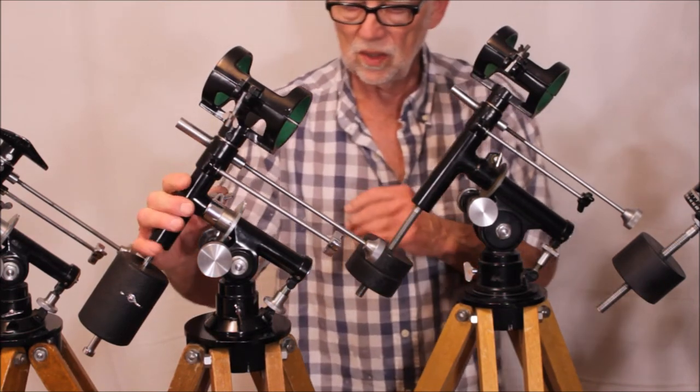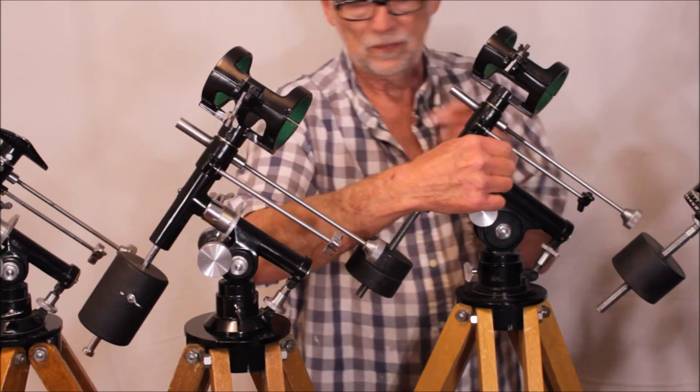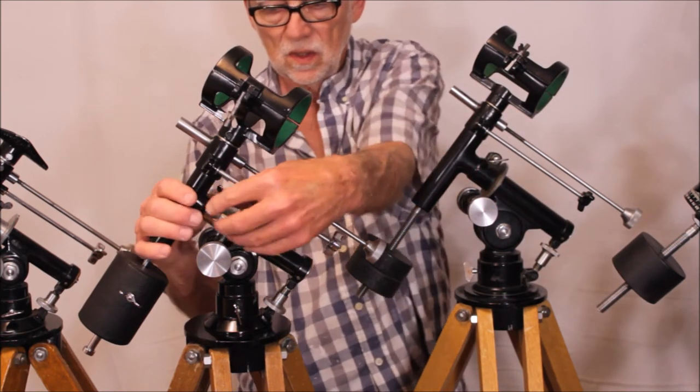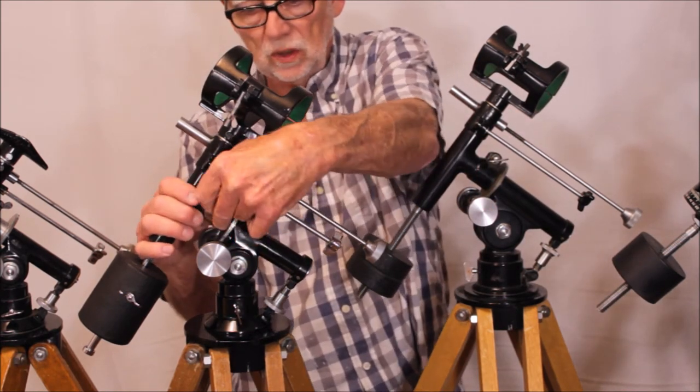And also notice this. In the older mounts this lock, the right ascension lock, is a kind of crude friction device.